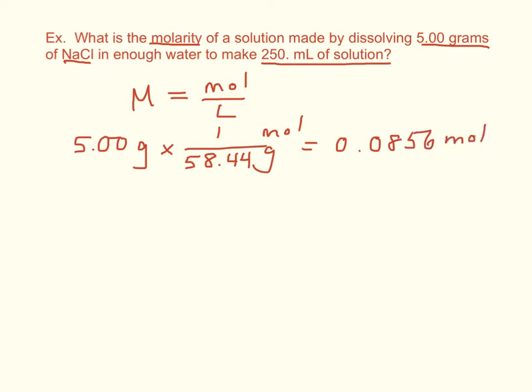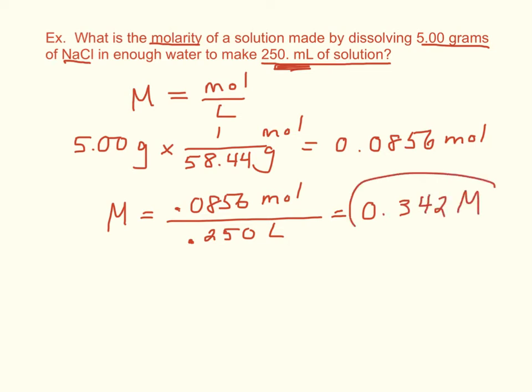So when we go ahead and plug that in now, we've got 0.0856 moles, and we're going to divide it by the liters of solution. Now they gave us milliliters, so we've got to change that to liters. But that's going to be 0.250 liters. There's 1,000 milliliters in a liter. And if you do that out, you get 0.342 molar, is how you say it, 0.342 molar.